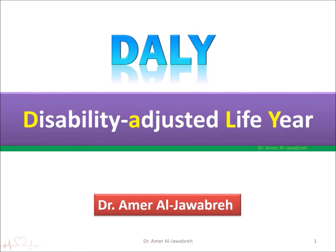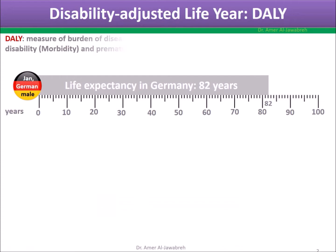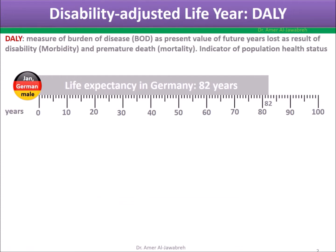DALY: Disability Adjusted Life Year. DALY is a measure of burden of disease, expressed as the present value of future years lost as a result of: 1. disability or morbidity, and 2. premature death or mortality. Premature death is death that happens before life expectancy in a certain population. DALY is an indicator of population health status.